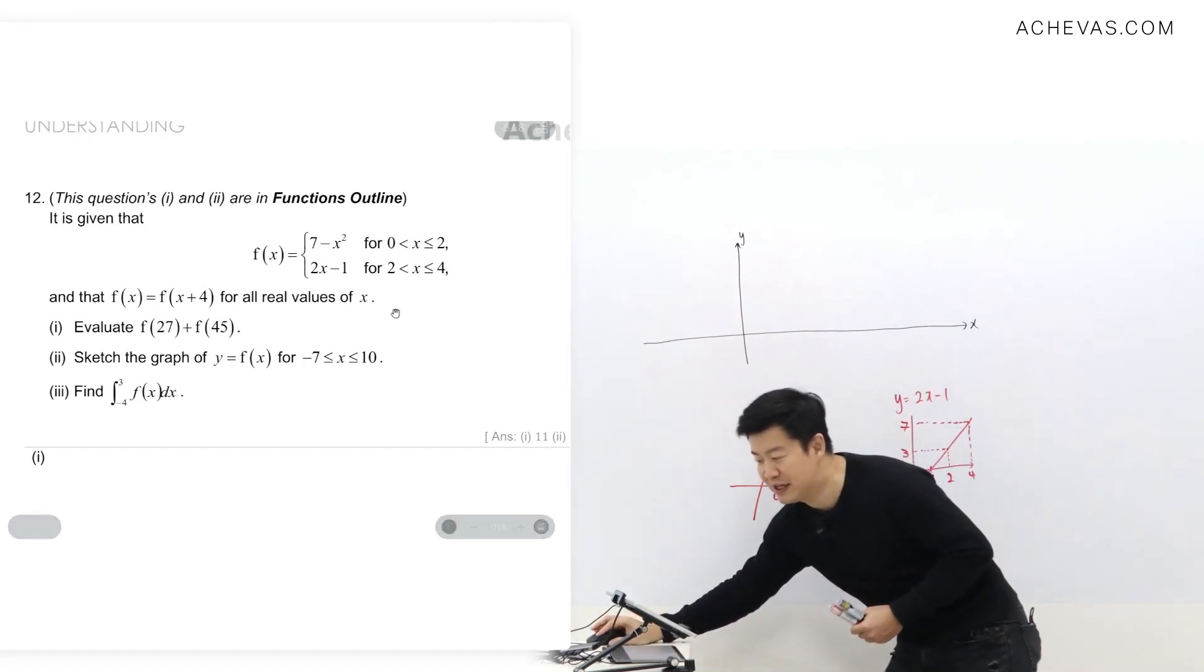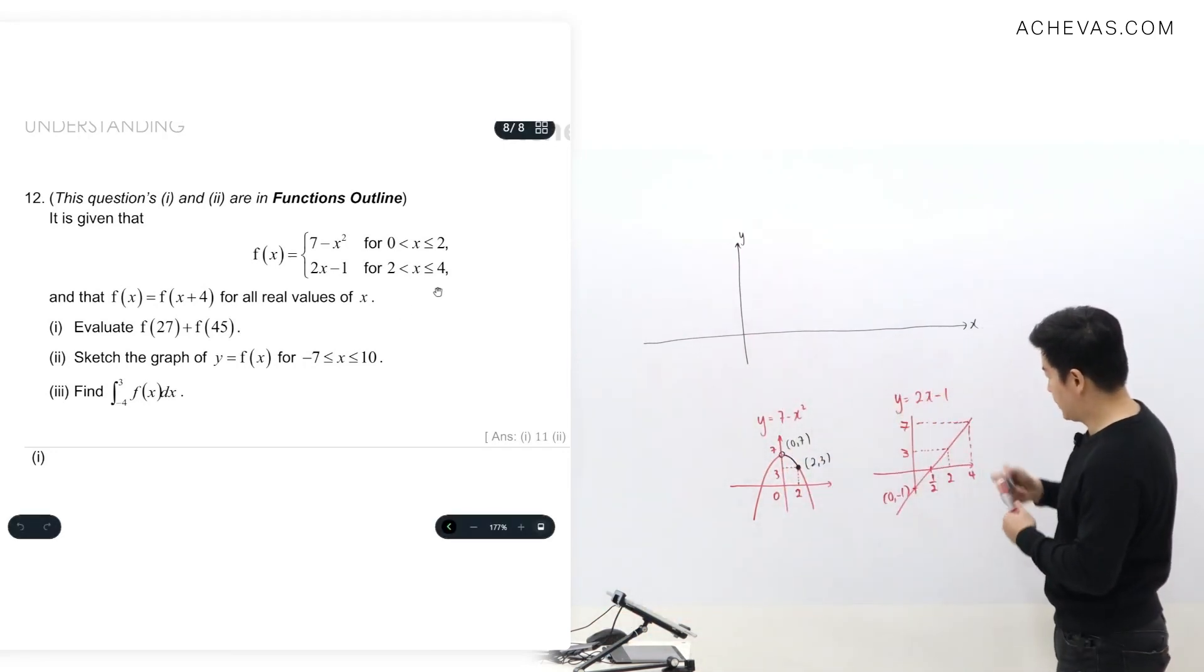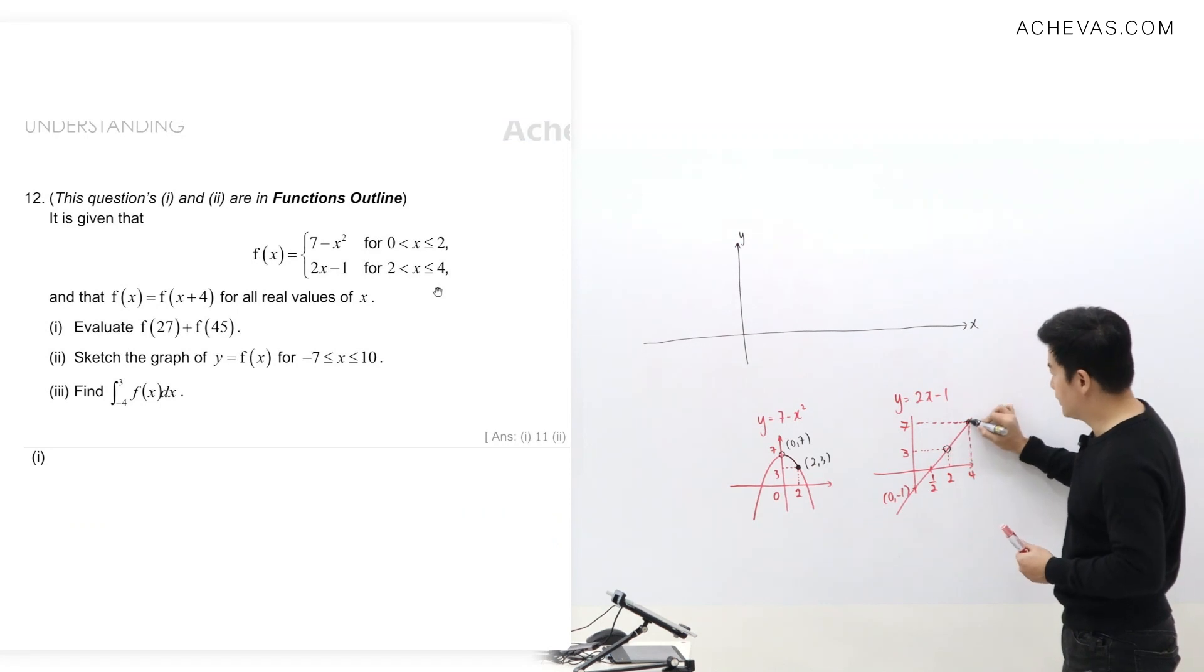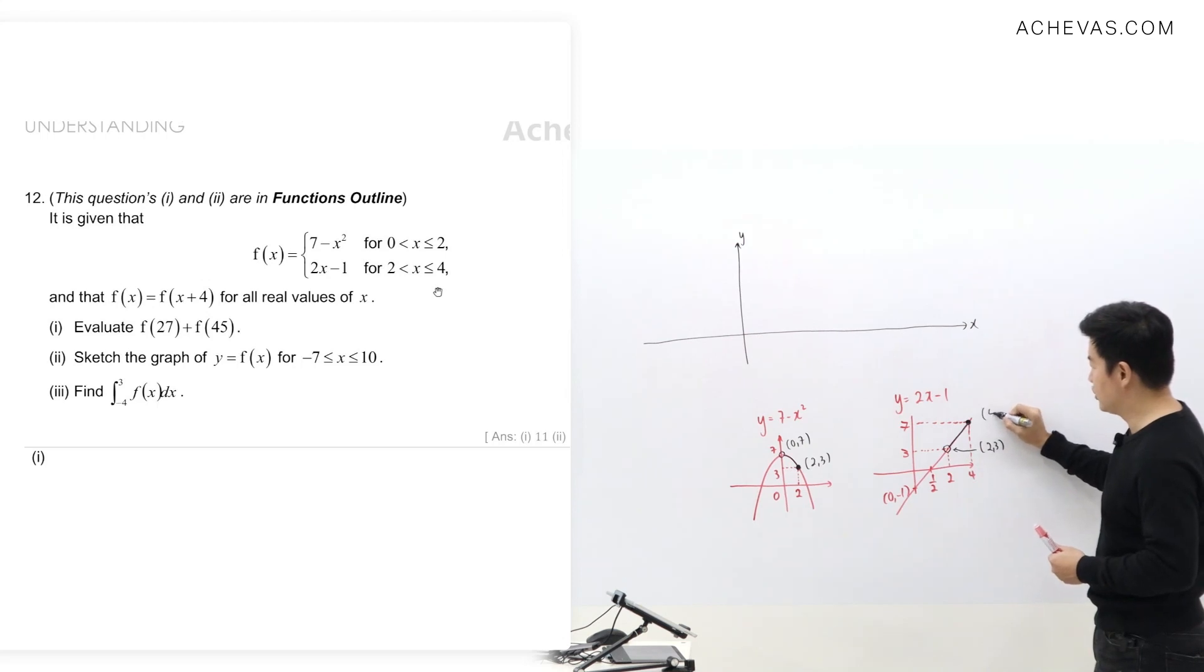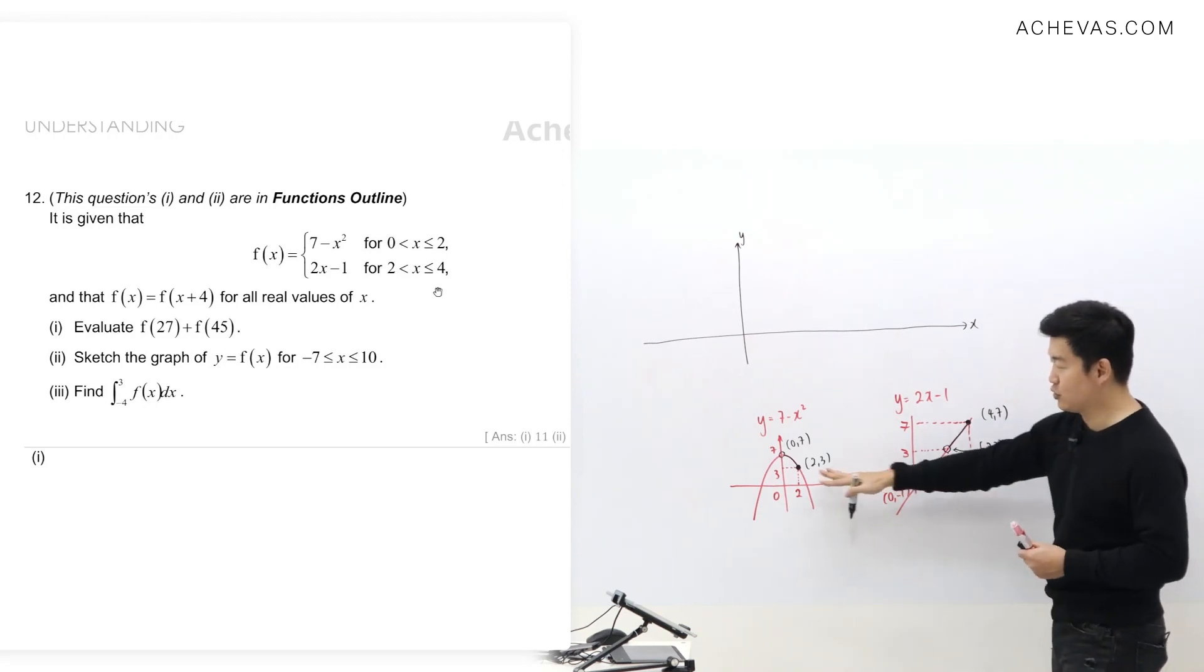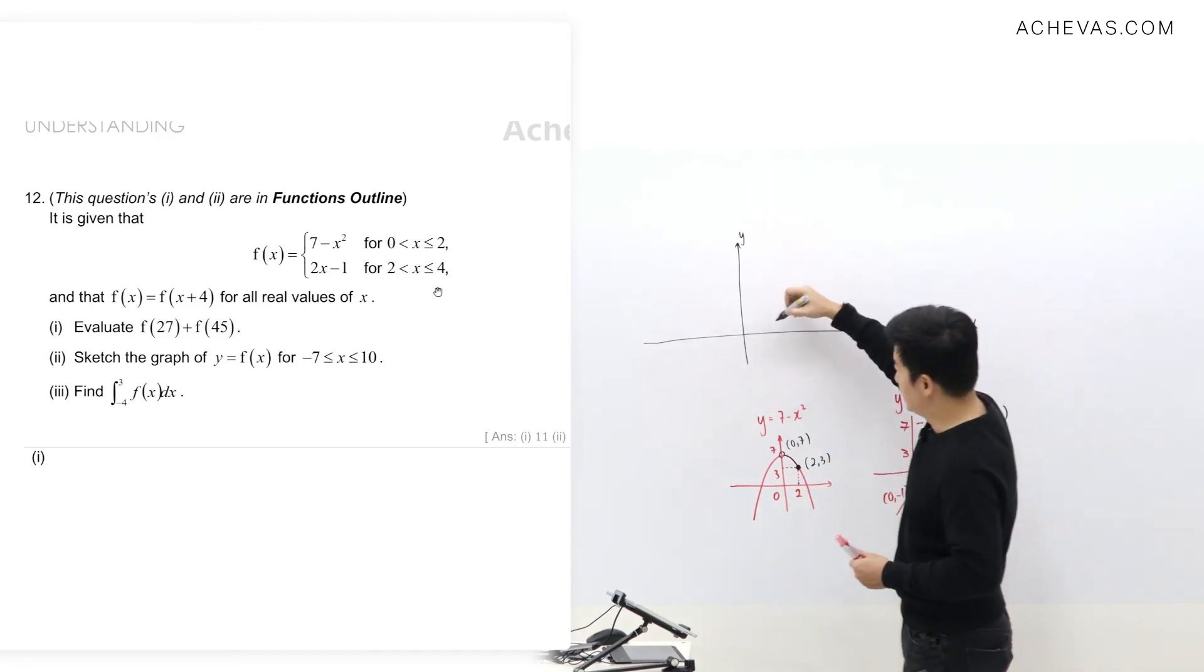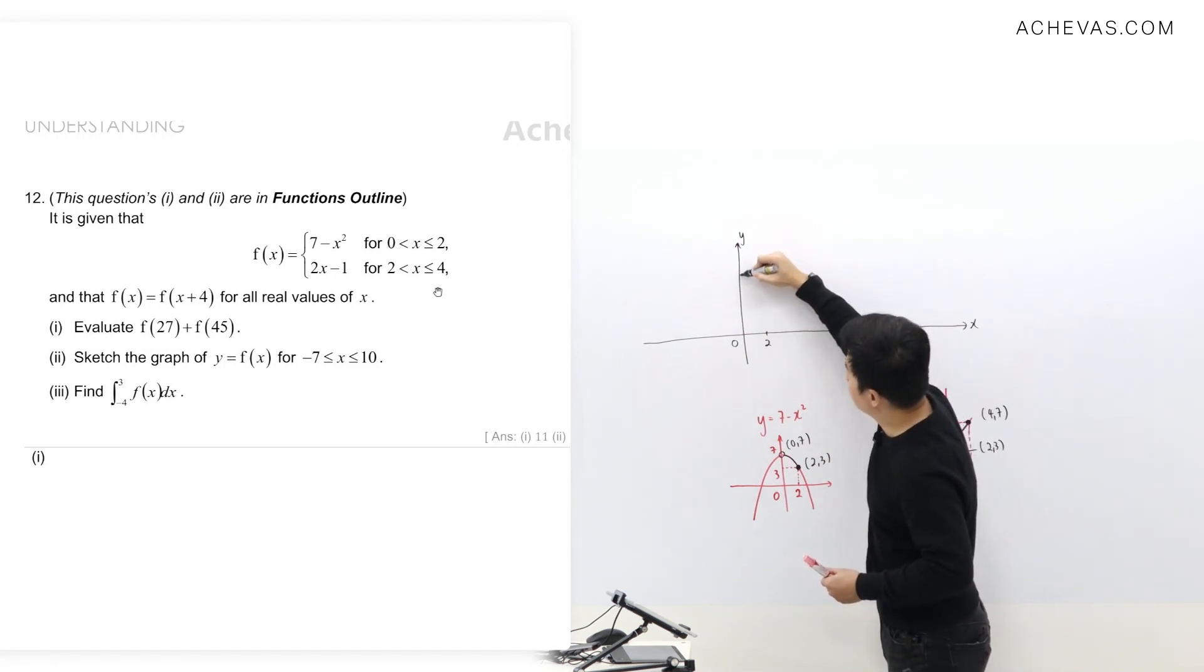Since this is strictly greater than two and less than or equal to four, we'll have this as a hollow dot and this as a solid dot. This point at (2,3) is synchronized to the other (2,3). This point at (4,7) is synchronized to seven. What I'm going to do is superimpose the first part from zero to two. Let me mark it down here so I have a graph that looks like this.